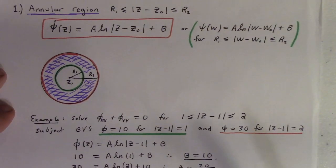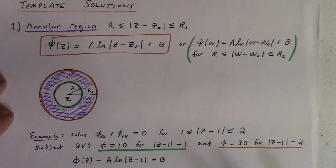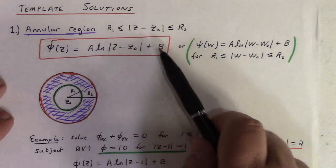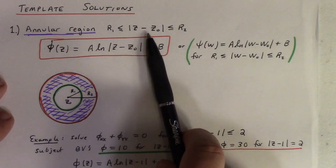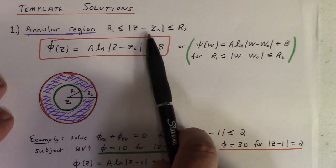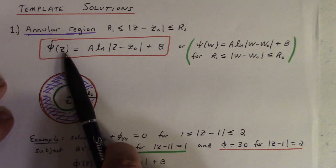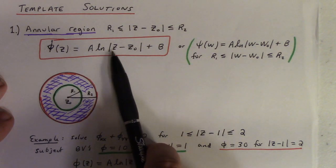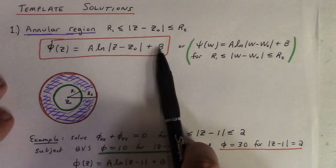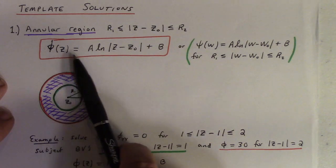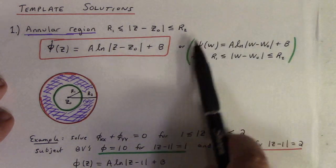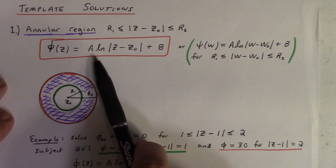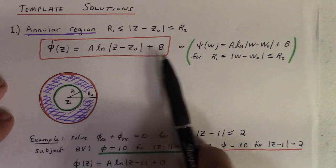Here are three template solutions — these should cover most of what you need for homework. First: the annular region. To solve Laplace's equation on the region between two circles, r₁ < |z − z₀| < r₂ with center z₀, use φ(z) = a·ln|z − z₀| + b. Choose a and b to fit boundary conditions. If needed, write it as ψ(w) = a·ln|w − w₀| + b with w's replacing z's.